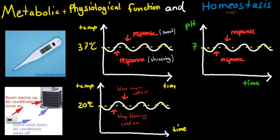In this video, I want to talk about homeostasis and how homeostasis is connected to maintaining normal metabolic and physiological function. Metabolic means how fast our chemical reactions occur, and physiological means how good our body is working. So basically, how does homeostasis help us do chemical reactions at the normal rate and maintain normal function of our body?